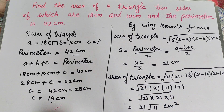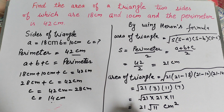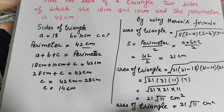So the area of the triangle is equal to 21 into square root of 11 cm squared. Thanks for watching.